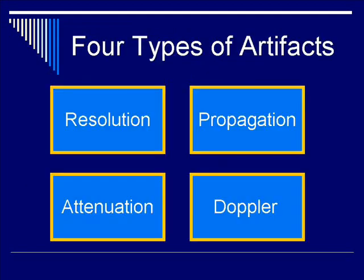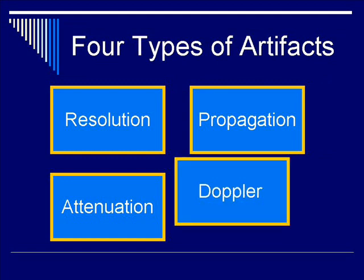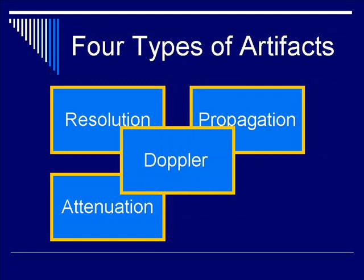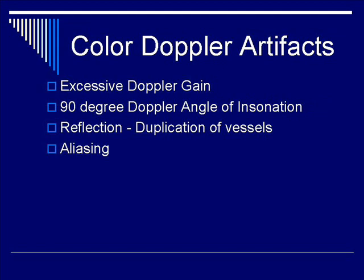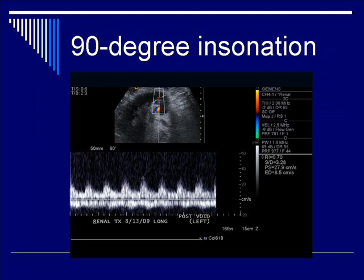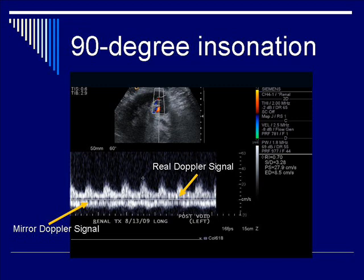We'll now finish our discussion on image artifacts by discussing the fourth category: Doppler artifacts. We're going to have a whole lecture, lecture number five, devoted specifically to Doppler physics. But in brief, color Doppler artifacts are due to one of four possibilities: excessive Doppler gain; use of a normal or 90-degree Doppler angle of inclination; reflection or duplication of vessels across a reflective plane; and aliasing. When doing color Doppler measurement, you want to be at most 60 degrees inclination. If you're anywhere close to 90 degrees, you can introduce ambiguity in terms of direction of the Doppler signal.